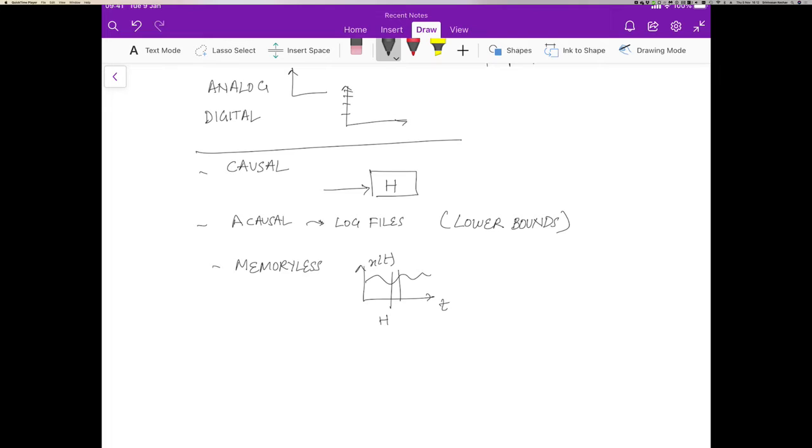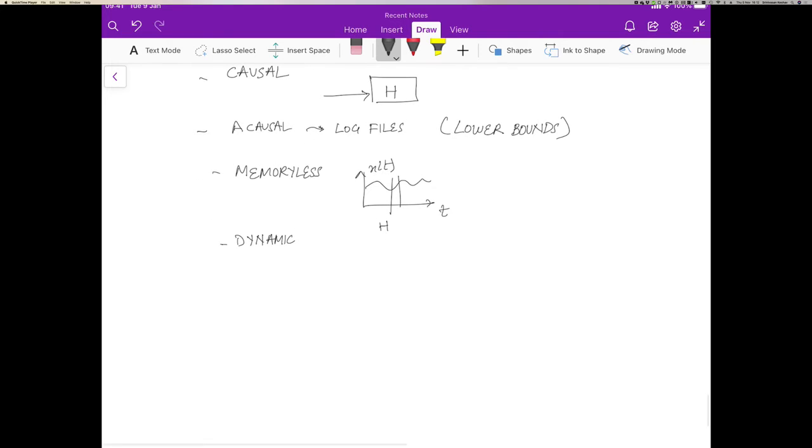And in contrast, in a dynamic system, H can remember what happened in the past. And for example, H can have a local store which keeps track of the past value of x and uses that in creating the next value. And so dynamic systems, for example, would be a system with some kind of storage. It could be a digital storage or some kind of a buffer, such as a reservoir of water is a buffer. For example, it remembers how much water was incident on the system in the past.